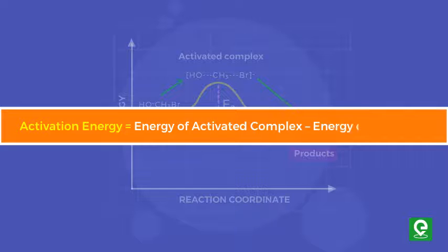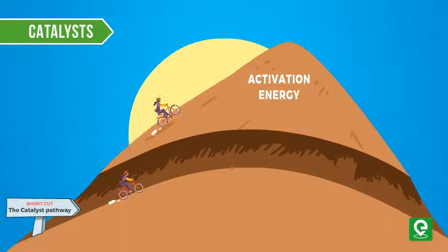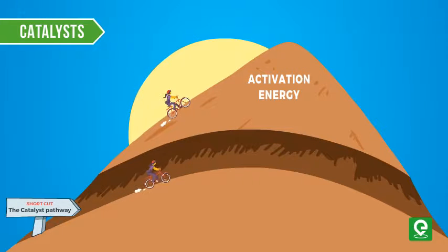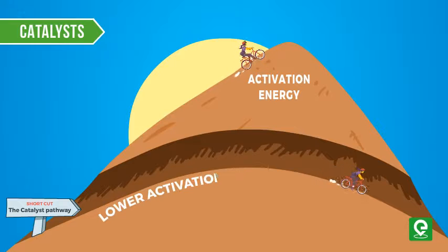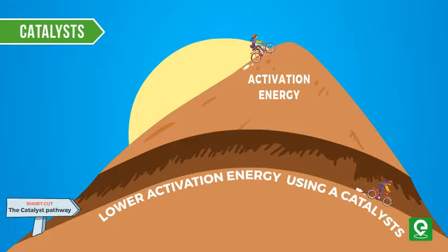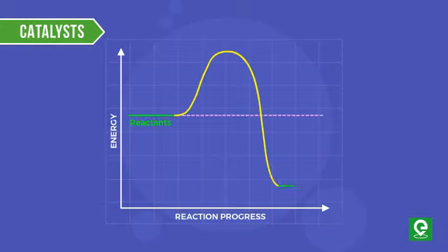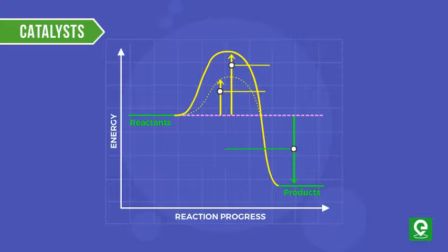Effect of catalysts on activation energy: A catalyst is a substance that speeds up the rate of a chemical reaction without being used up in the reaction. Catalysts follow a different pathway which has lower activation energy than the one followed by the uncatalyzed reaction. As a result, a greater proportion of reactant particles have enough energy to complete the reaction.